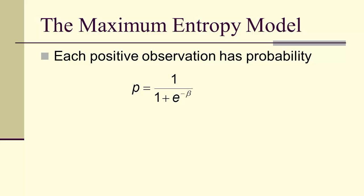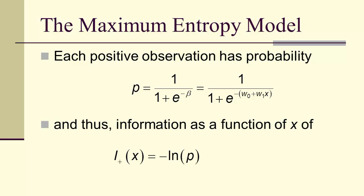Notice first that each positive observation has the probability 1 over 1 plus e to the negative (w0 plus w1x). And therefore the information is modeled for the positive observations as the negative log of that probability.